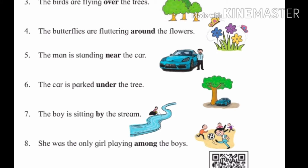The butterflies are fluttering around the flowers. Fulpaakhre he phulanchya aauti bauti firat ahet. Butterflies means fulpaakhre, fluttering means firne, around means aauti bauti, flowers means phule. When we say 'sobho tali' or 'aauti bauti,' we use the word 'around.'